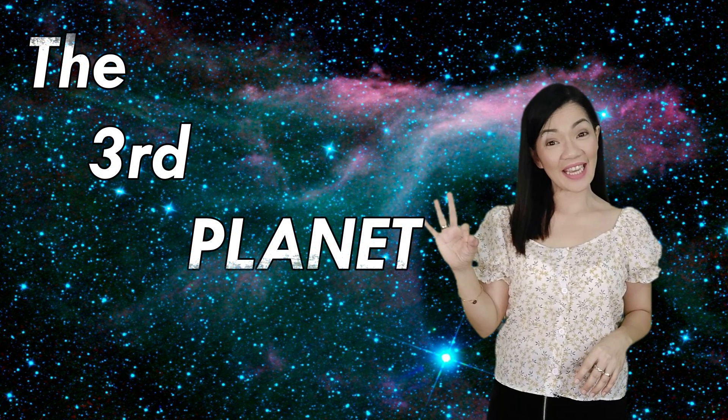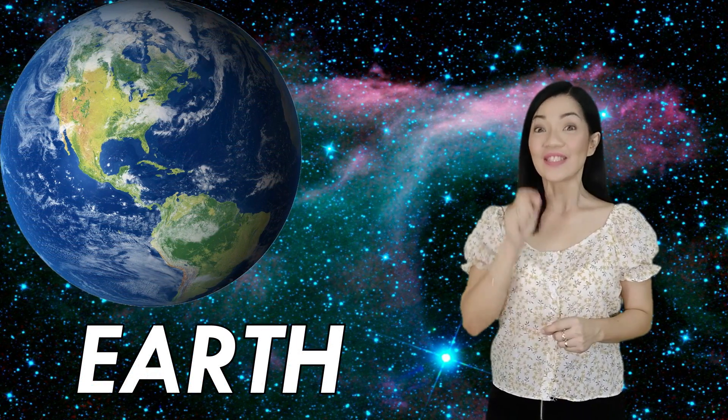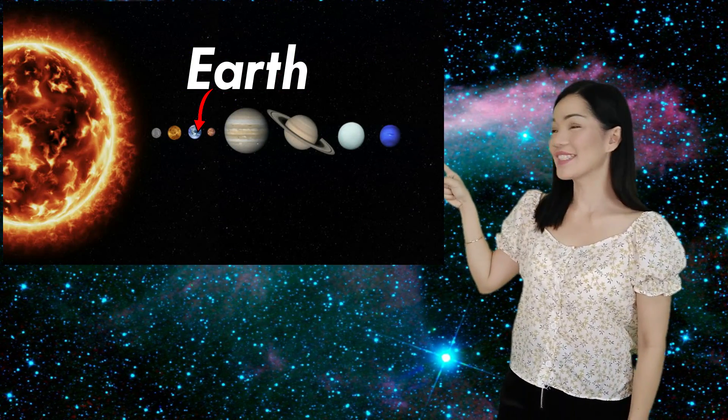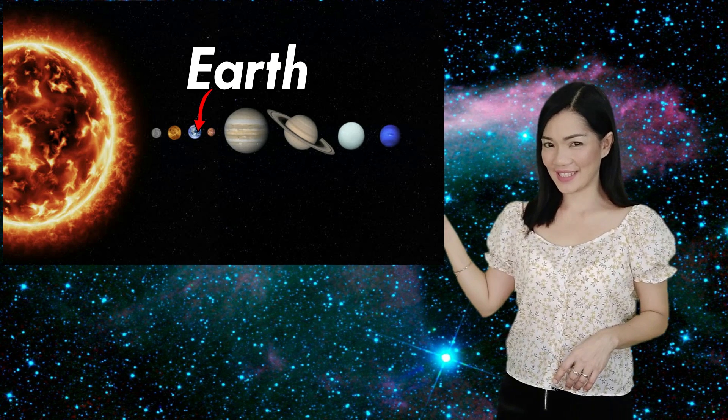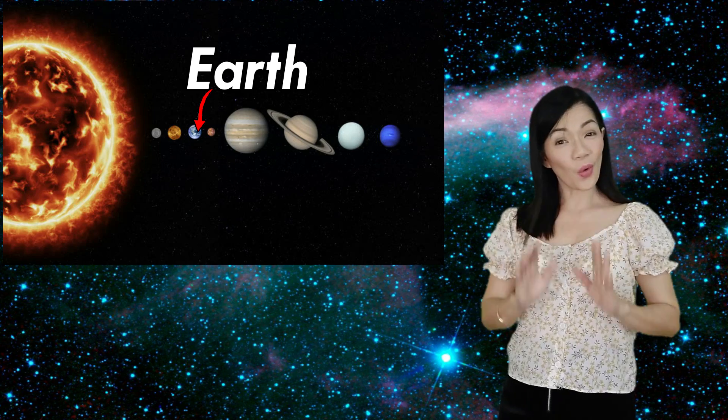The third planet is ours. Yes, the Earth. The Earth is the third planet from the sun. Here is where the Earth is. By the way, the planets never lined up like this. I just have them like this so you can see the order of the planets from the sun. It's interesting.